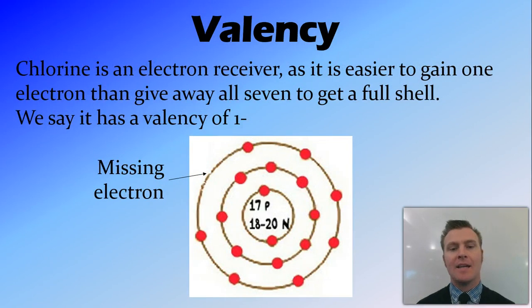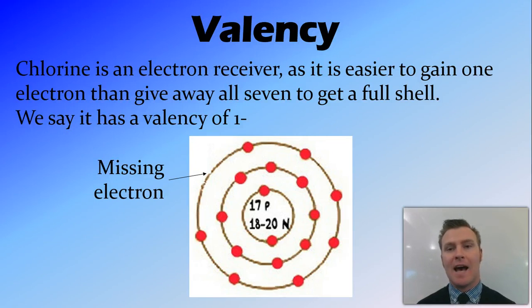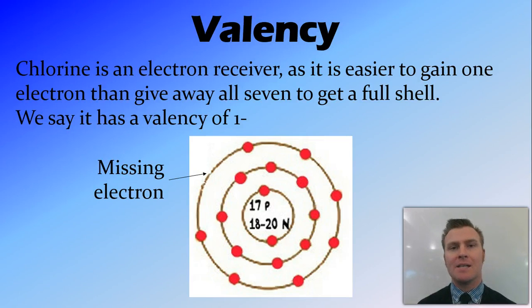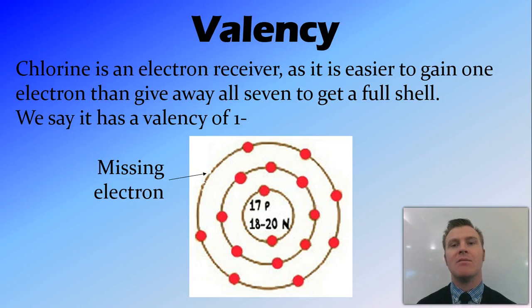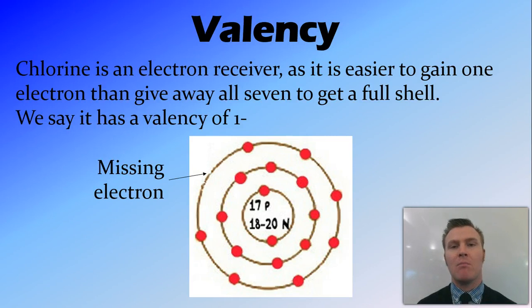Chlorine, on the other hand, has seven electrons in its outer shell, or seven valence electrons. A full shell has eight, so it either wants to give away its seven or gain one. It's much easier for it to gain one than to give away seven. So it is an electron receiver, and it has a valency of one minus — it's missing one electron.